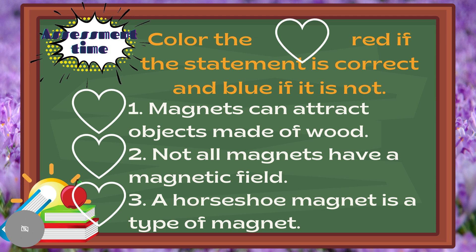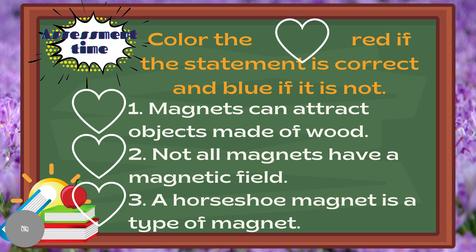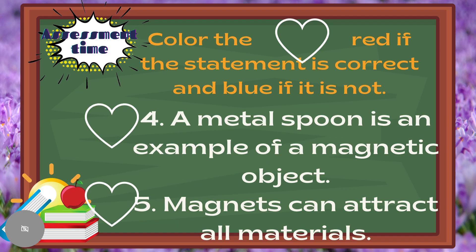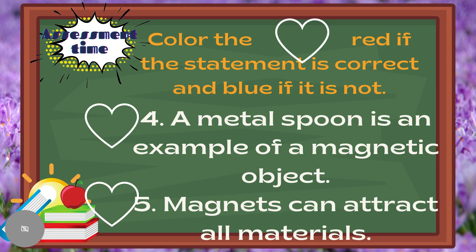Number 2: Not all magnets have a magnetic field. Number 3: A horseshoe magnet is a type of magnet. Number 4: A metal spoon is an example of a magnetic object. And for number 5: Magnets can attract all materials.